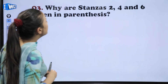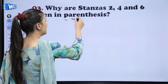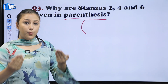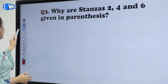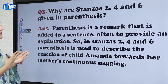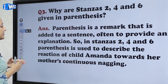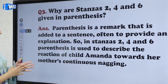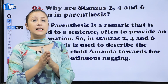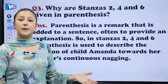The next question is: why are stanzas 2, 4 and 6 given in parenthesis? Parenthesis means bracket. Parenthesis is a remark that is added to a sentence, often to provide an explanation. In stanzas 2, 4 and 6, parenthesis is used to describe the reaction of child Amanda towards her mother's continuous nagging.